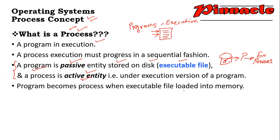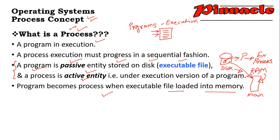Program becomes a process when the executable file is loaded into the memory. When the program is loaded from disk storage into the memory, then execution begins. When all files are loaded into the memory, your program will be executed — it will become a process. There are many programs in our system; when we double-click the programs, the program will be processed.